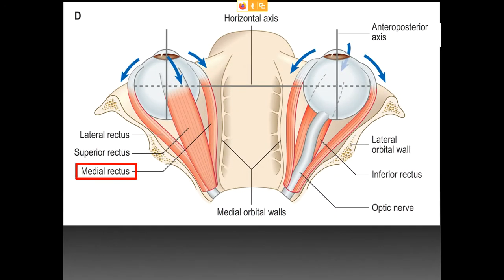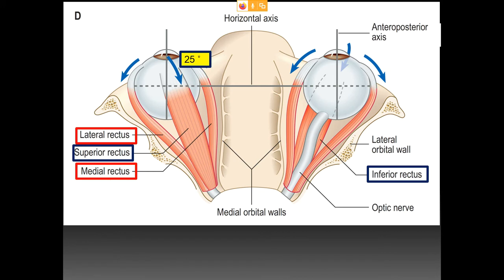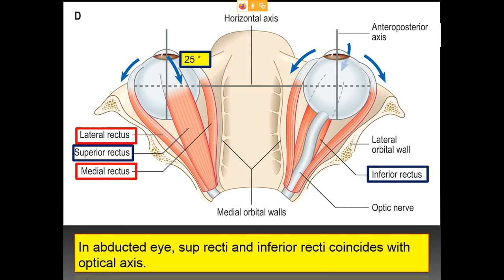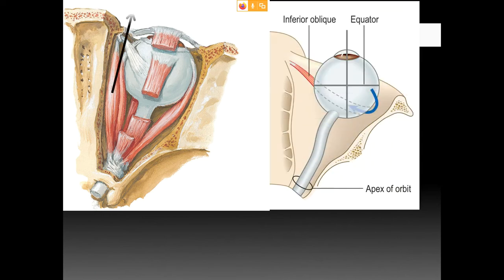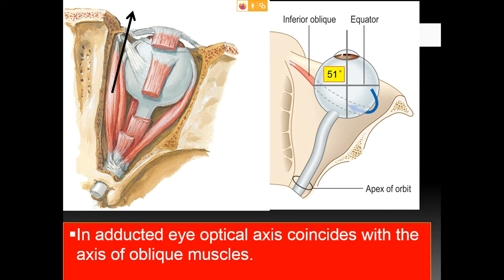When both eyes look forward, the midpoint of the equator of the right and left eye forms the horizontal axis. The medial rectus, lateral rectus, superior rectus, and inferior rectus are the four muscles most important for moving the eyeball. In the abducted eye, the superior rectus and inferior rectus coincide with the optical axis, whereas in the adducted eye, the optical axis coincides with the axis of the oblique muscles.